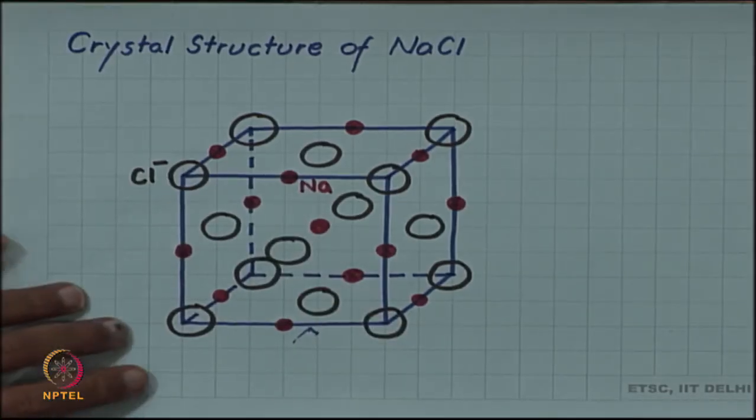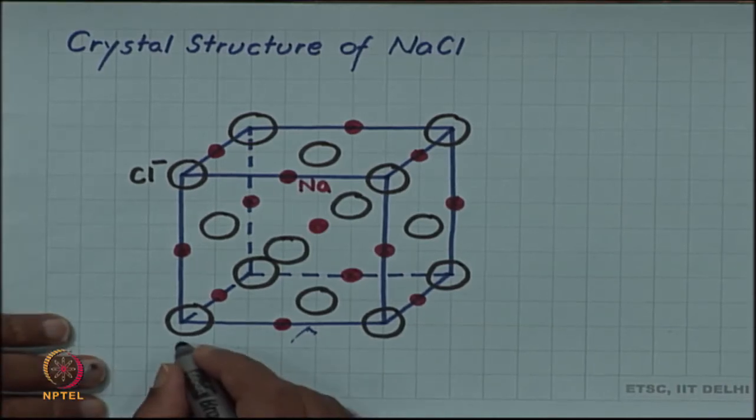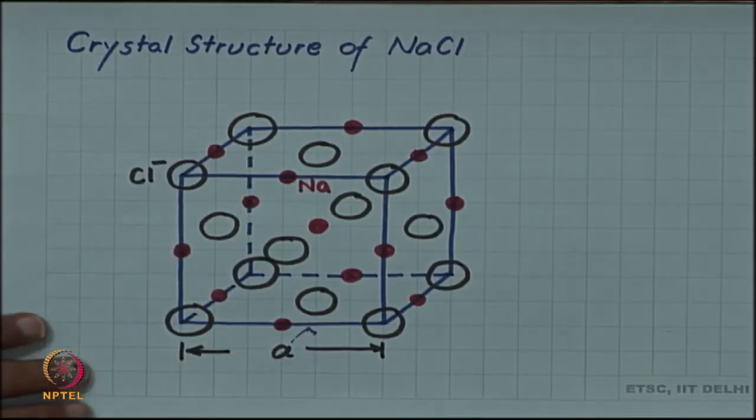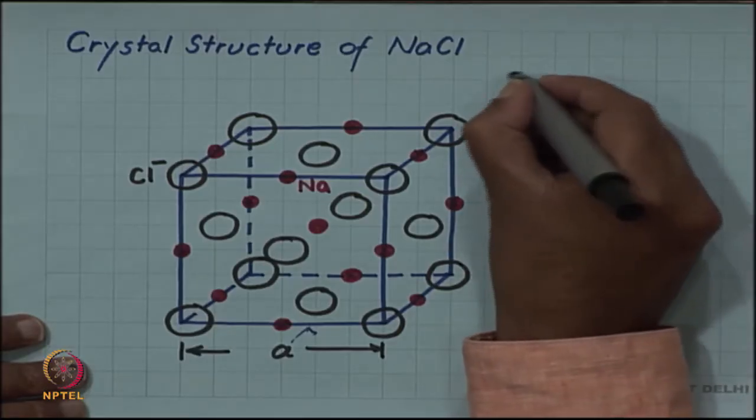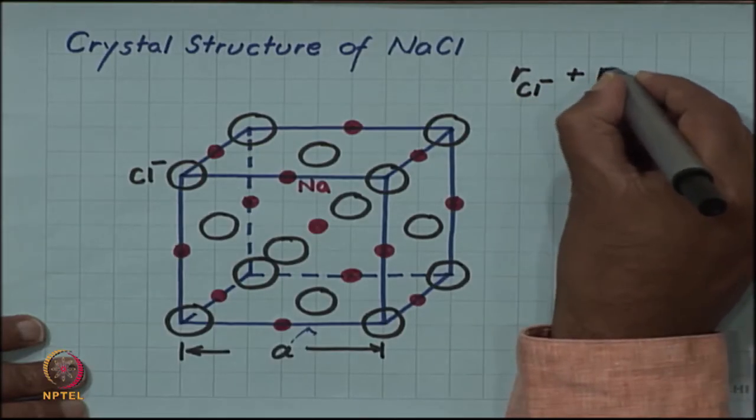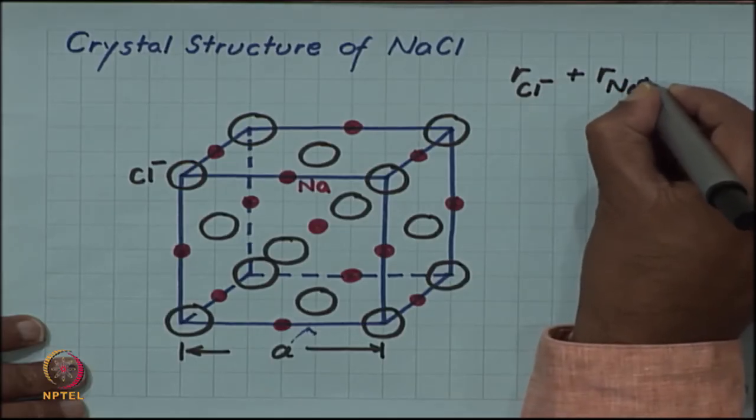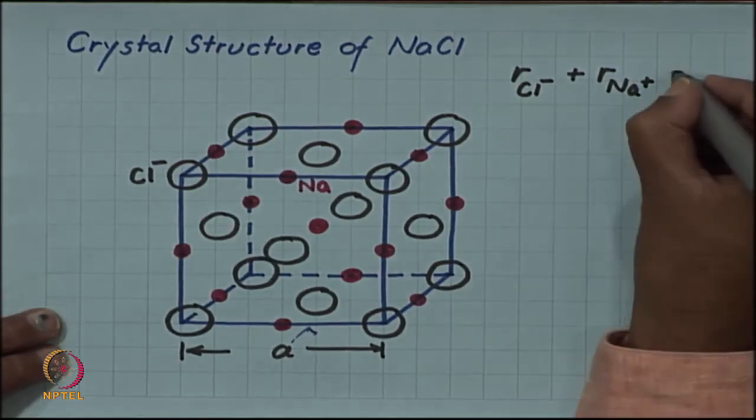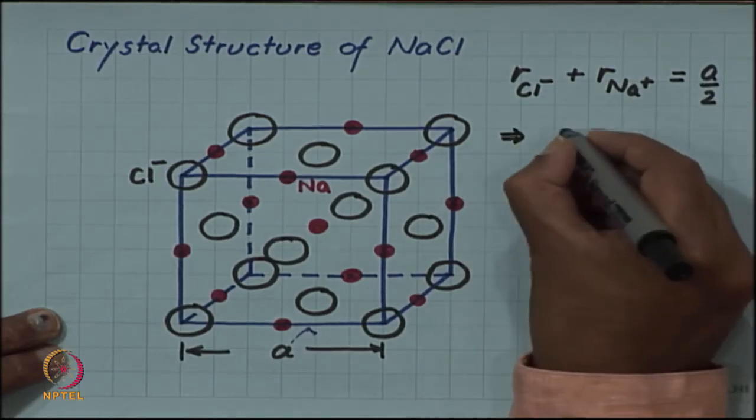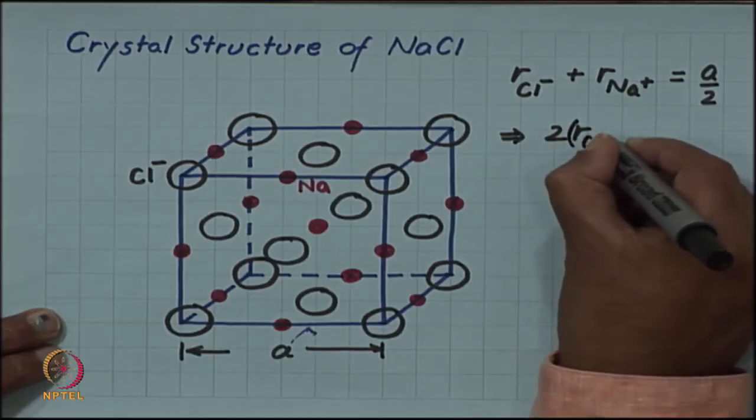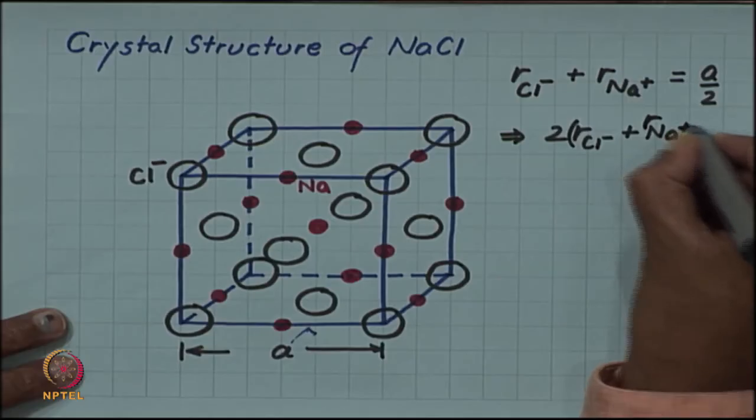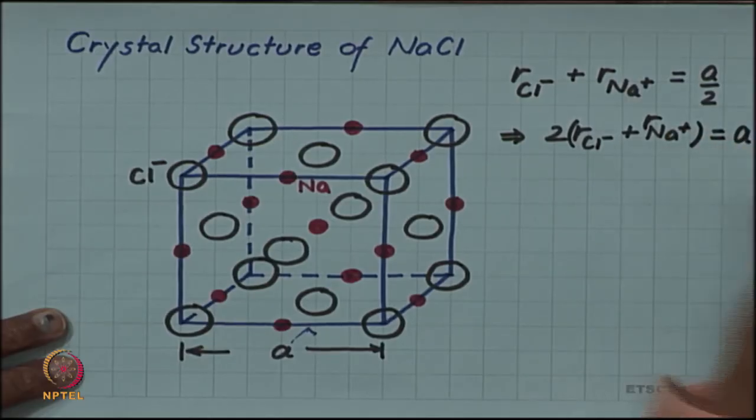You can write the relationship between the radii and the lattice parameter. If the lattice parameter or the edge of the cube is a, then the radius of the chloride ion plus the radius of the sodium ion should be equal to a/2. In other words, 2(r_Cl + r_Na) = a.